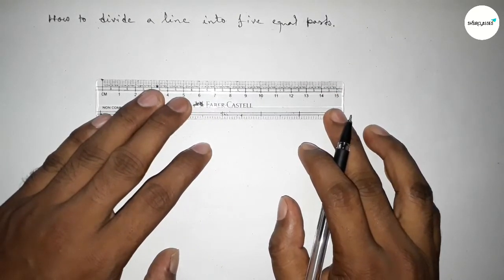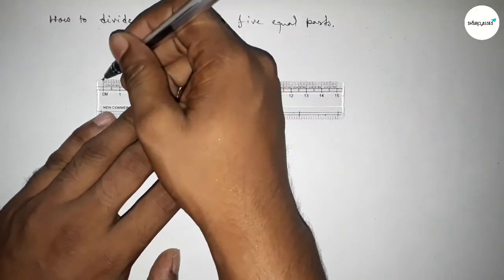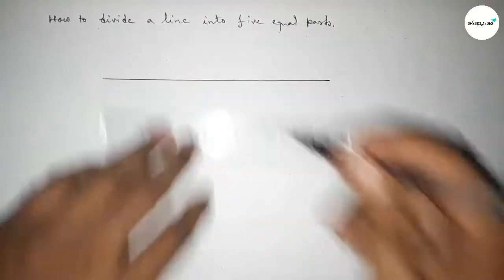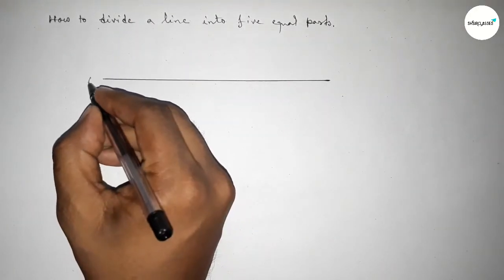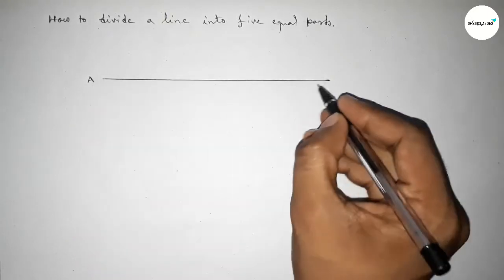First, drawing here a line and taking here point A and here B.